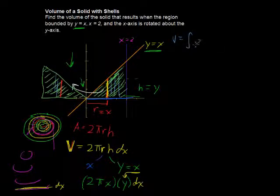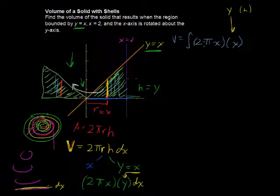So we have 2π times x times our x, and that's, again, that's our y, our height. And then multiplied by dx.